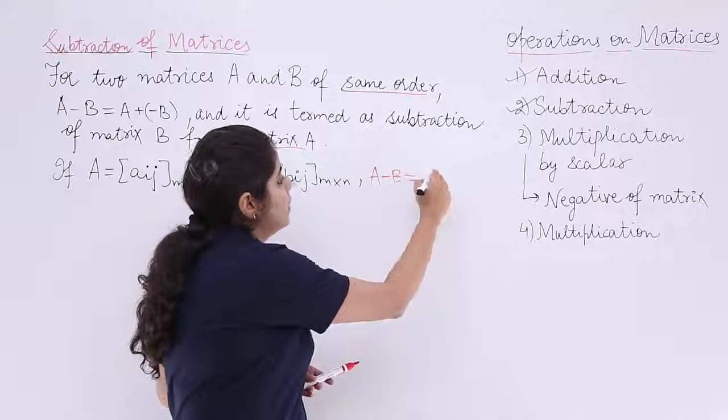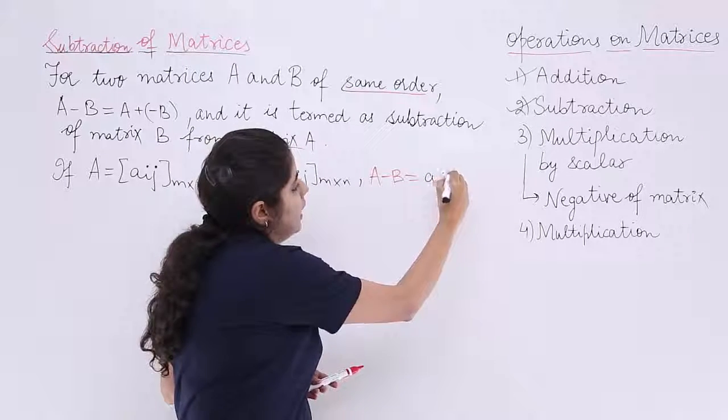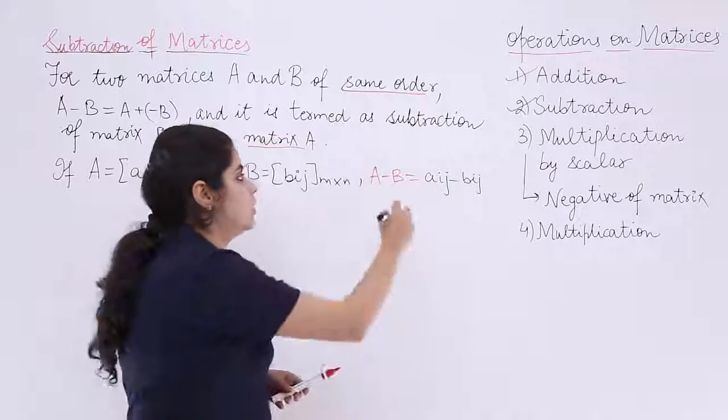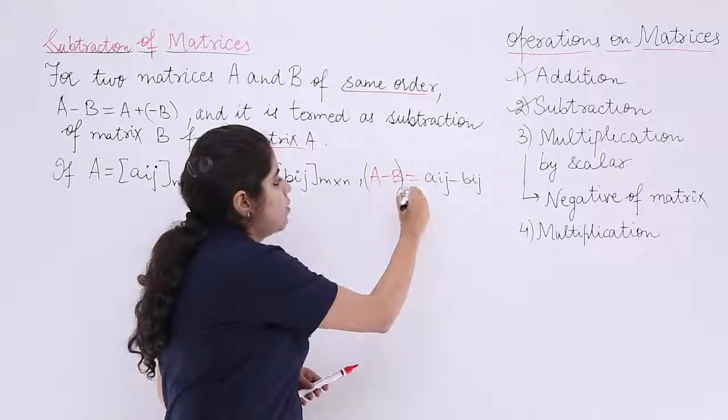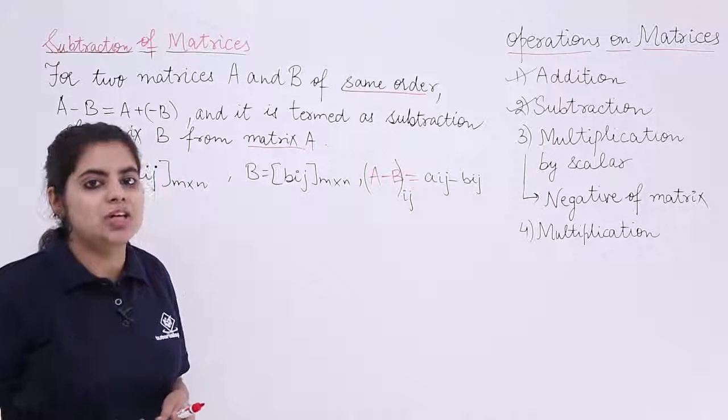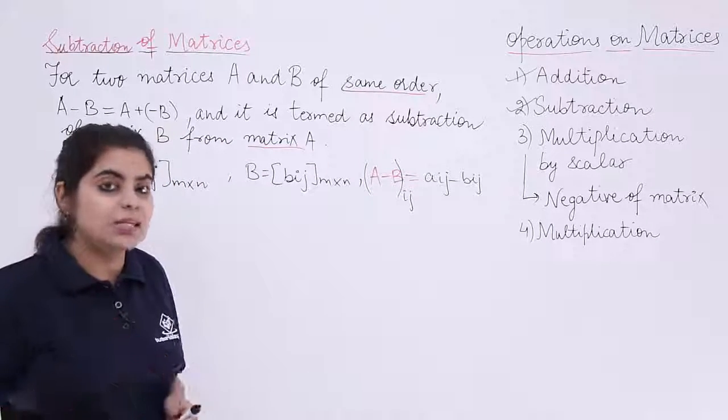This time we will be having Aij minus Bij and here I can write Aij - Bij because we are going to treat and put the values of i and j one by one. Let's see one example.